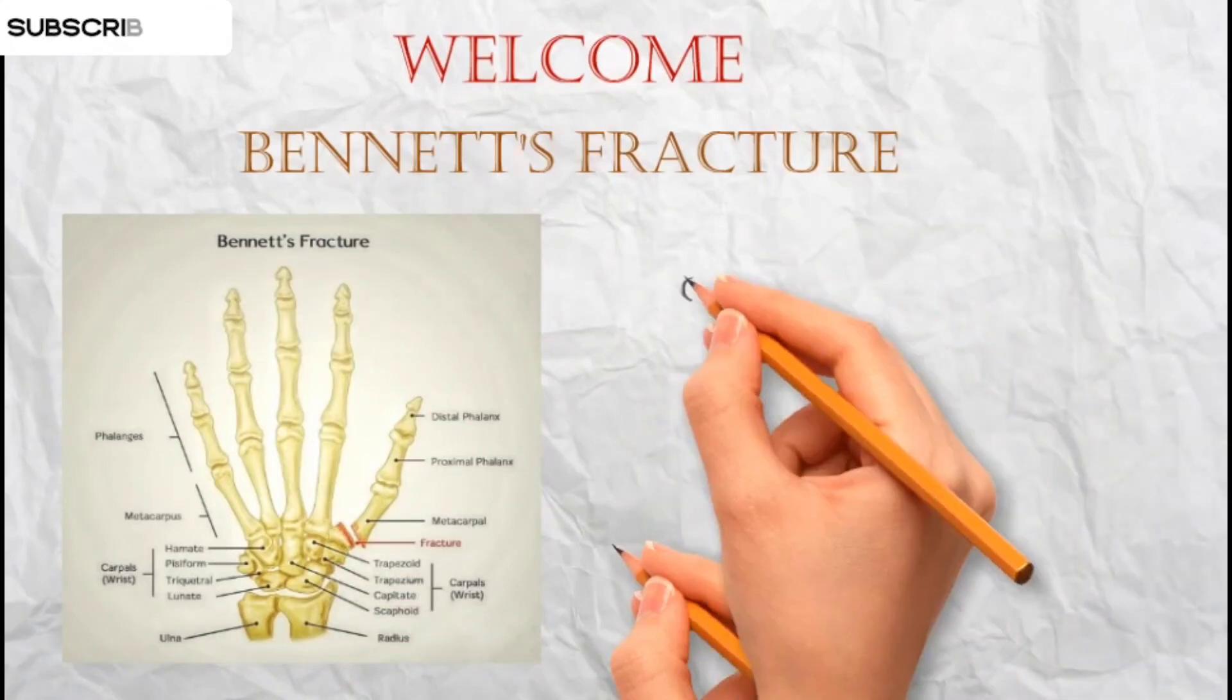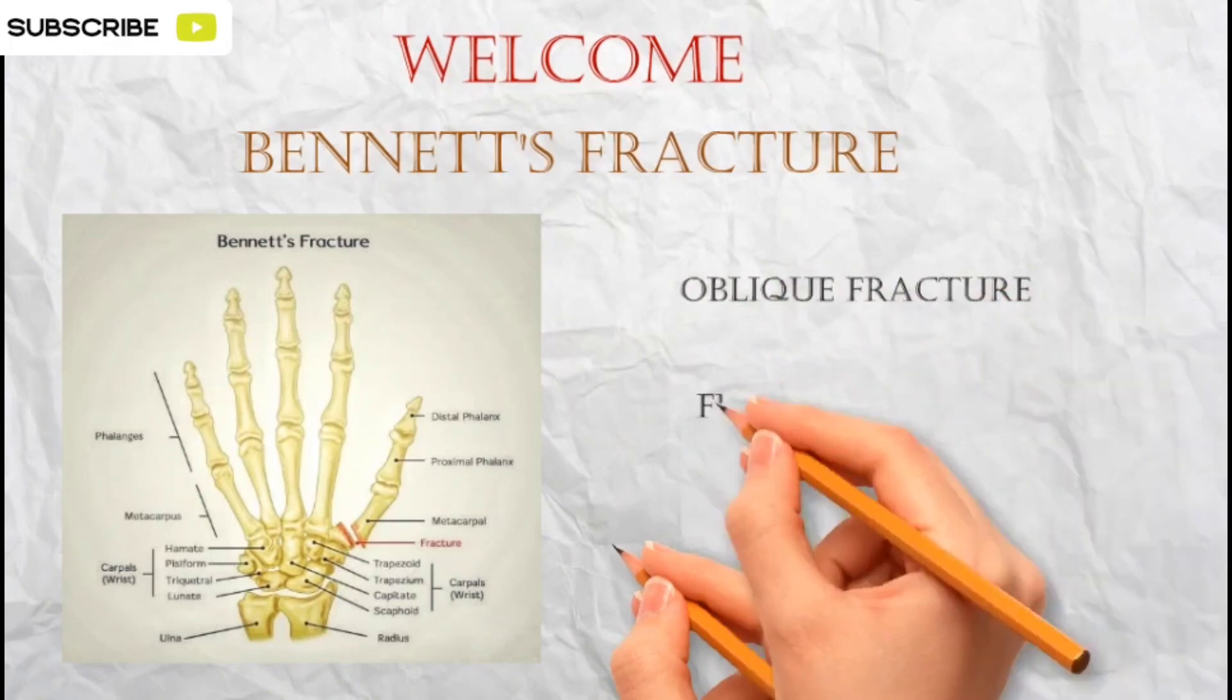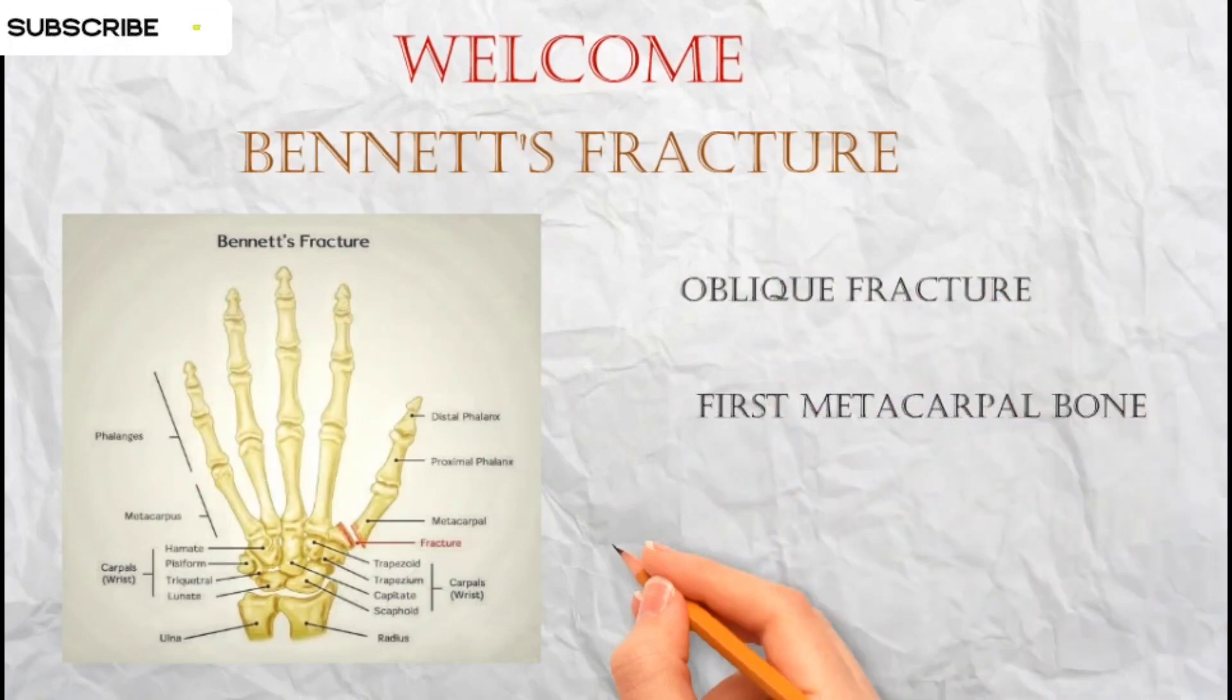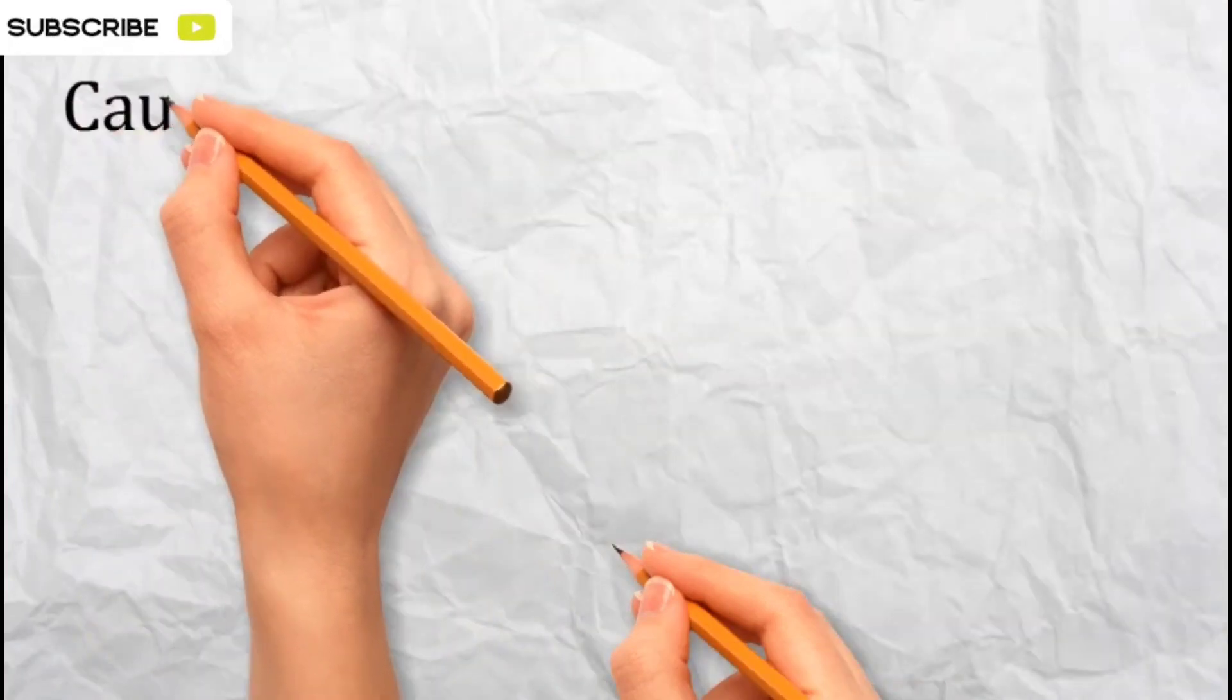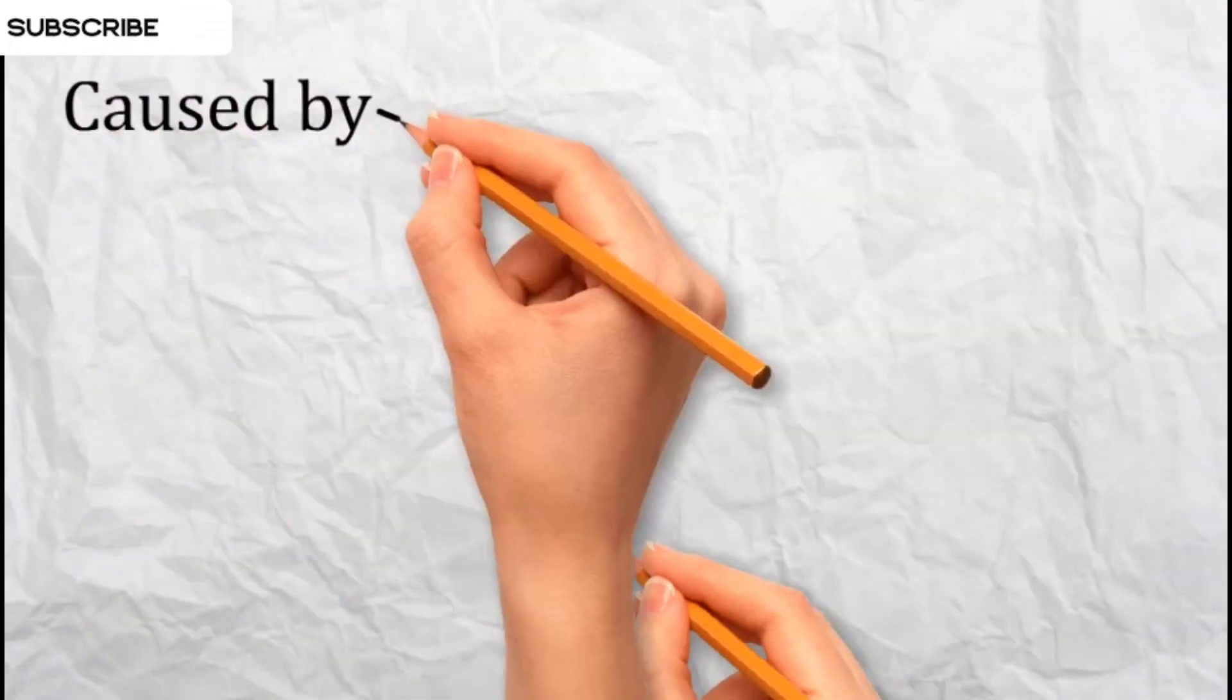Bennett's Fracture is an oblique fracture that occurs at the base of the first metacarpal bone, which is the bone in the thumb. This type of fracture is often caused by a specific mechanism of injury.